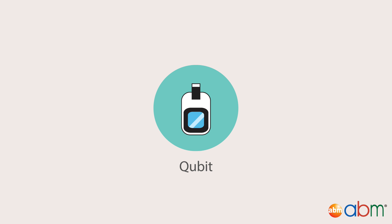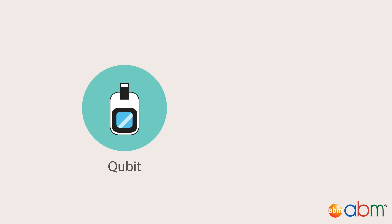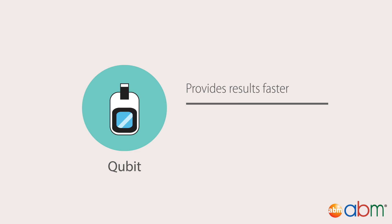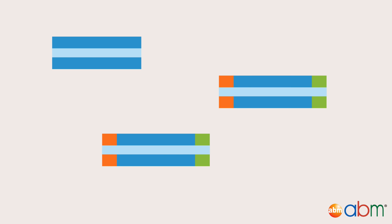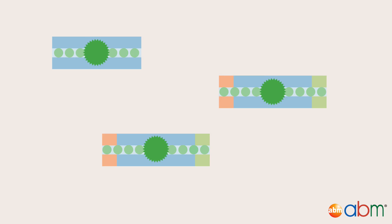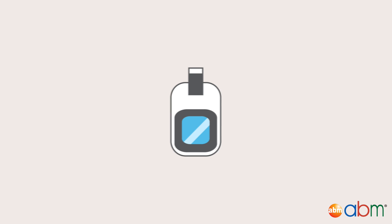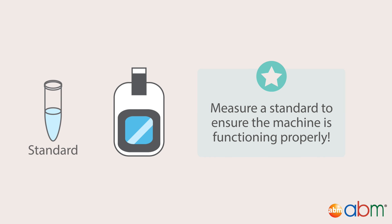Qubit is an alternative to qPCR for quantifying a sample library. Relative to qPCR, it provides results faster. However, it is not applicable for cases where there is no PCR enrichment, as it is less sensitive than qPCR and requires more sample. Quantification is performed by mixing the sample, which may be diluted, with the appropriate dye, which is then illuminated and detected by the machine. Note that a standard must be measured with the appropriate assay prior to sample quantification.